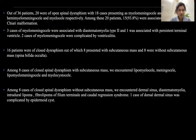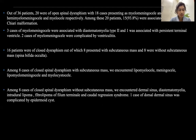Out of 36 patients in our study, 20 were of open spinal dysraphism. Out of these, 18 were myelomeningocele, one was hemimyelomeningocele, and the other was myelocele. Among these 20 patients, 15, that is 93.8%, were associated with Chiari malformation type 2. Three cases of myelomeningocele were associated with diastematomyelia type 2. One was associated with persistent terminal ventricle, and two cases were complicated by ventriculitis.